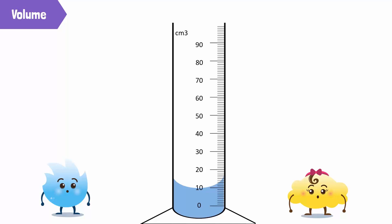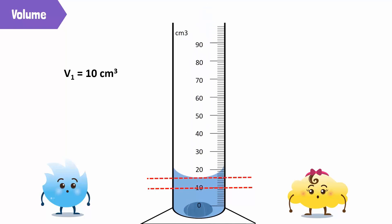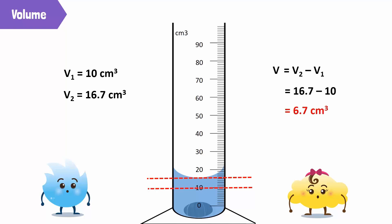Let's measure the volume of Bubbles' pebble. First we measure the volume of the cylinder with water but without the pebble — we measure 10 cubic centimeters. We write this down as V1. Then we add Bubbles' pebble and note down the new position of the meniscus — it now measures 16.7 cubic centimeters. This is V2. To calculate the volume of her pebble, we calculate V equals V2 minus V1. The volume of her pebble is 6.7 cubic centimeters.